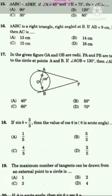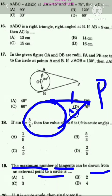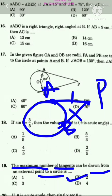The nineteenth question: what is the maximum number of tangents that can be drawn from an external point to a circle? From an external point, we can draw only 2 tangents — PA and PB. The answer is option B, which is 2.